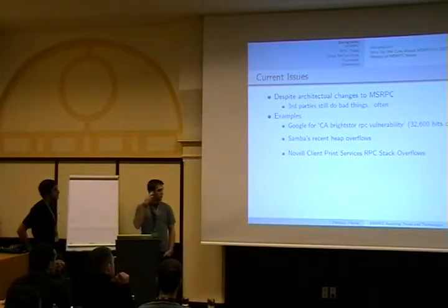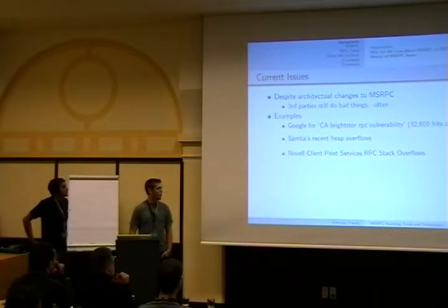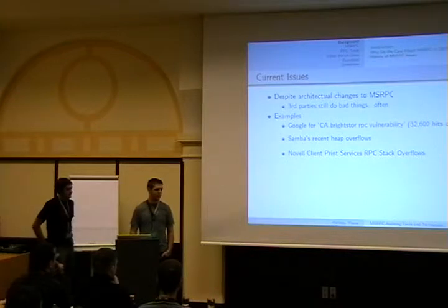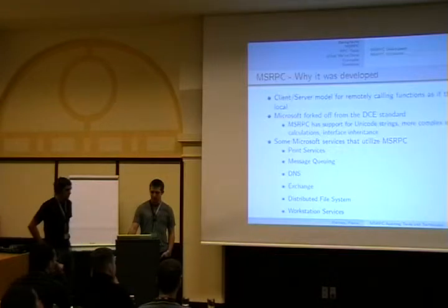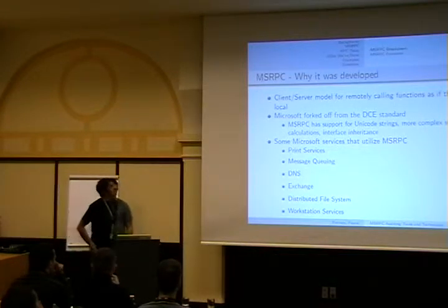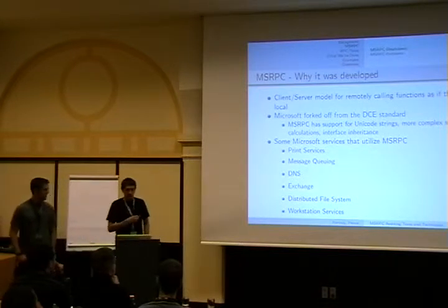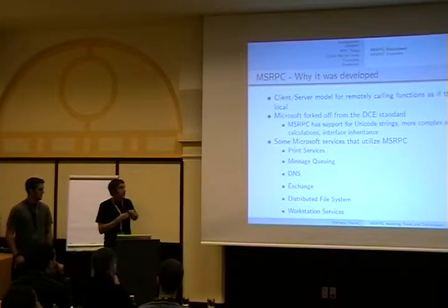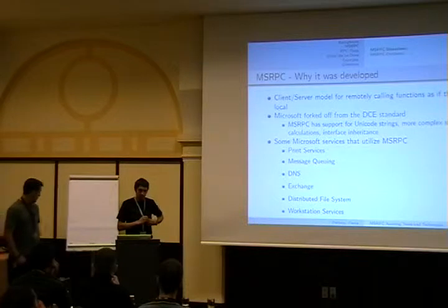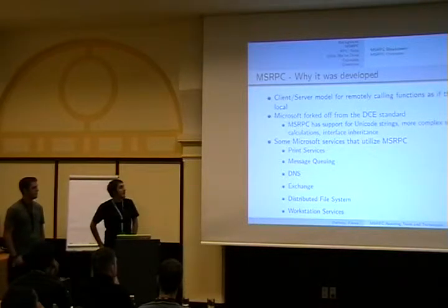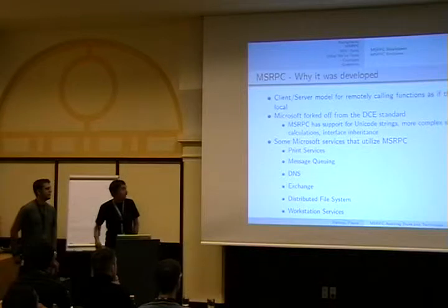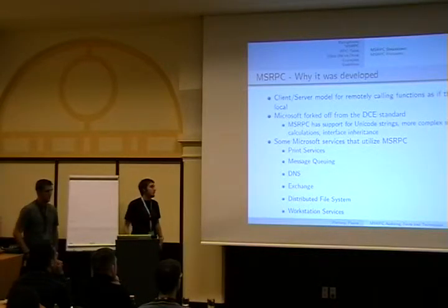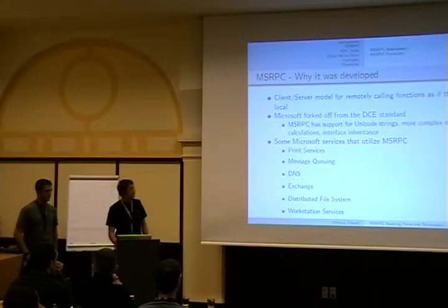For instance, CA BrightStore — if you search for vulnerabilities in that, you'll find an obscene amount. The demo we're going to do has an RPC service with 400 different functions available, and none of the Microsoft ones come close to having that many. Then you have stuff like Novell print services, which had a few bugs released this month. RPC was originally developed as a client-server model for remotely calling functions. What Microsoft did was provide a simple way for developers to do remote communications, forking from the OpenDCE standard, and Microsoft core services use that for communicating between domain controllers and other systems.